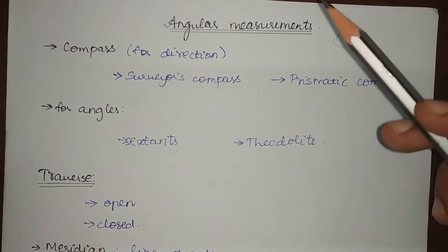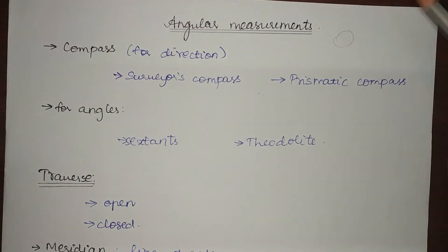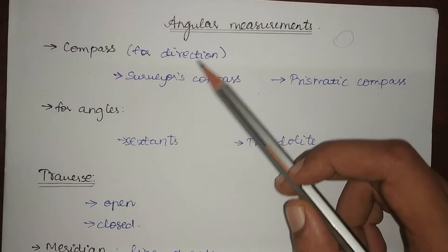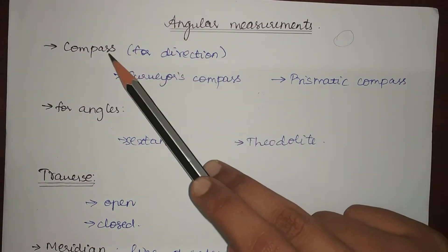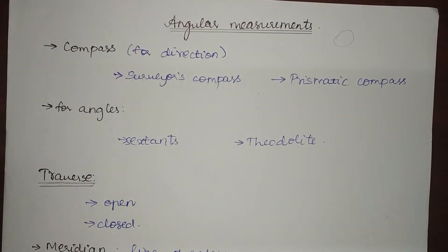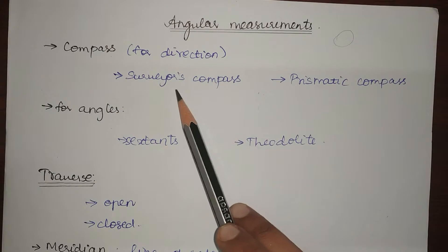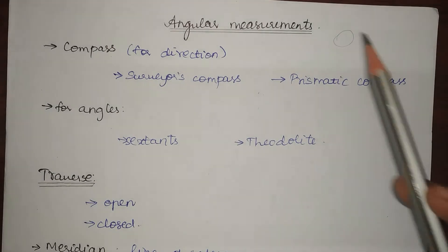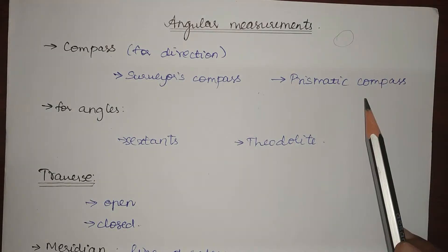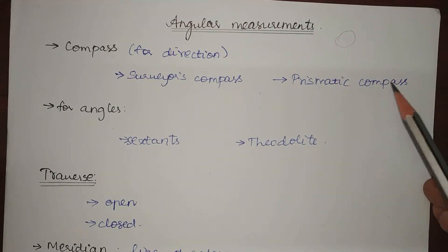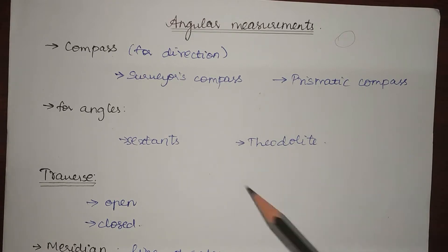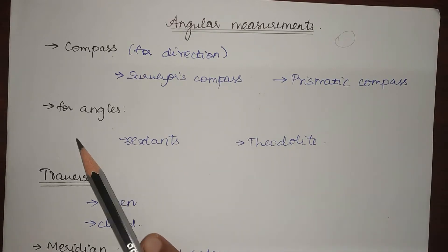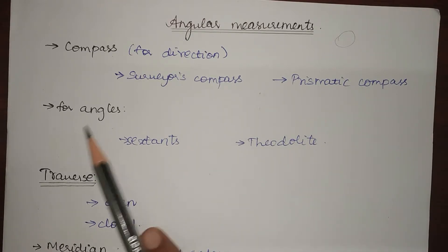In angular measurements, we measure two things: direction and angle. For directions, we use a compass. The types of compasses available are the surveyor's compass and the prismatic compass, which we will look into in detail in this video.